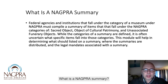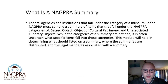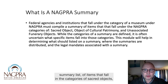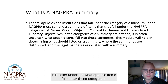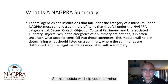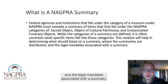What is a NAGPRA summary? Federal agencies and institutions that fall under the category of a museum under the law have to compile a summary list of items that fall under the categories of sacred objects, objects of cultural patrimony, and unassociated funerary objects. While the categories of a summary are defined, it is often uncertain what specific items fall under these categories. This module will help you determine what should be listed on a summary, where the summaries are distributed, and the legal mandates associated with a summary.